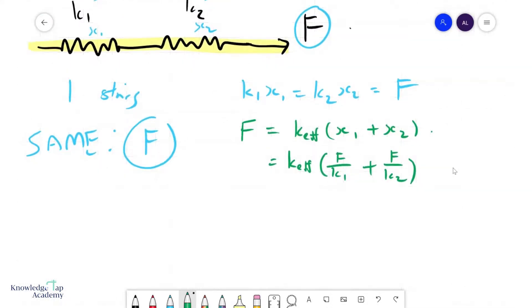And if you see what happens, the f's will all cancel away. One, two, three, all go away. And so we are left with 1 over k effective equals 1 over k1 plus 1 over k2.